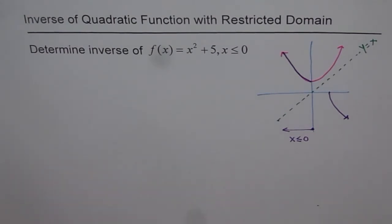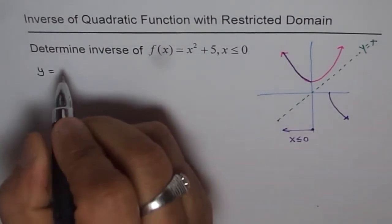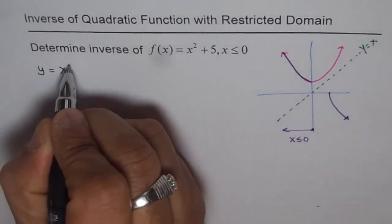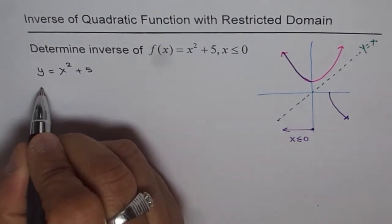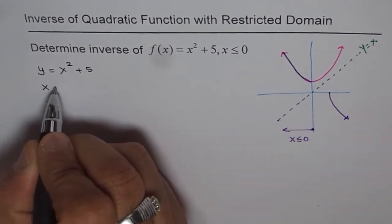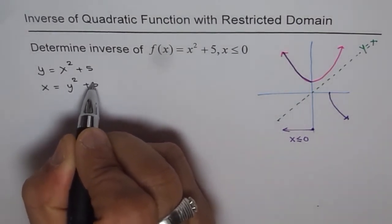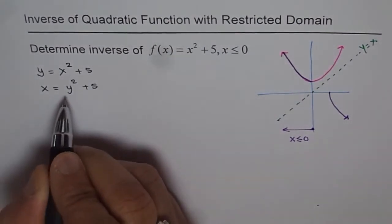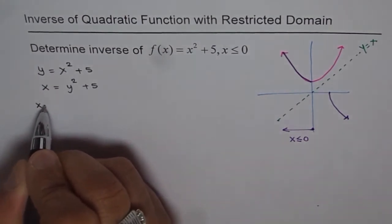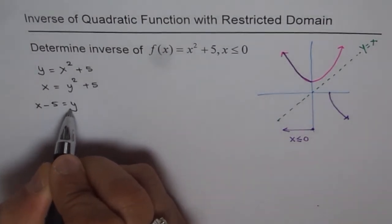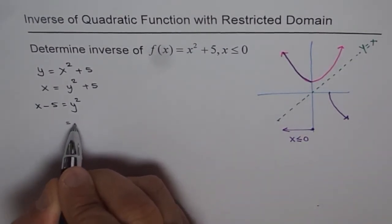Now let's follow the algebraic procedure. We start with y = x² + 5 and swap x and y to find the inverse, giving x = y² + 5. Isolating y, we get x - 5 = y², and then we take the square root.